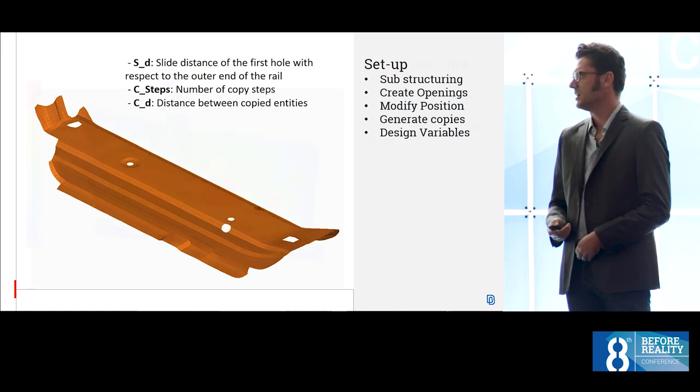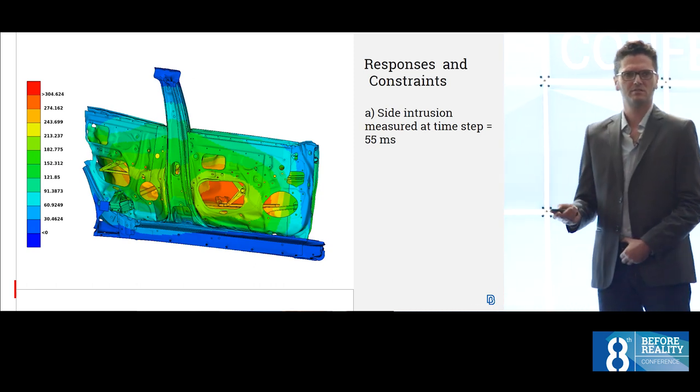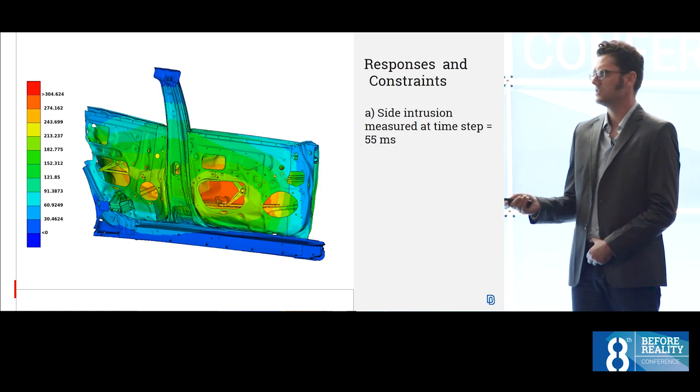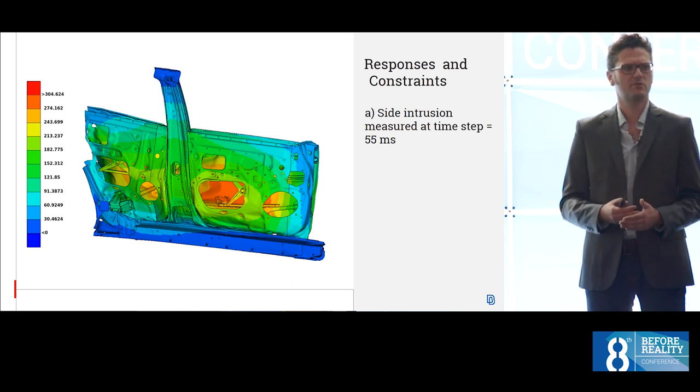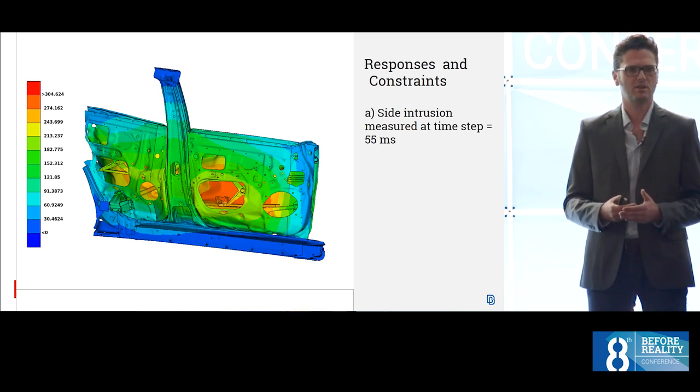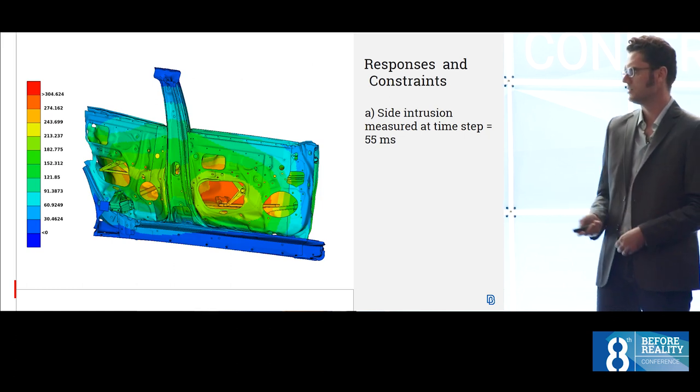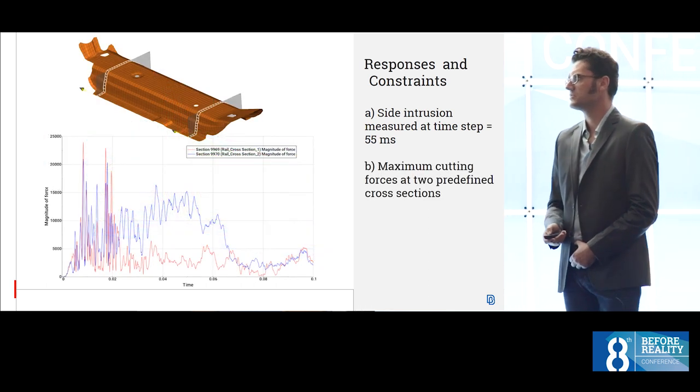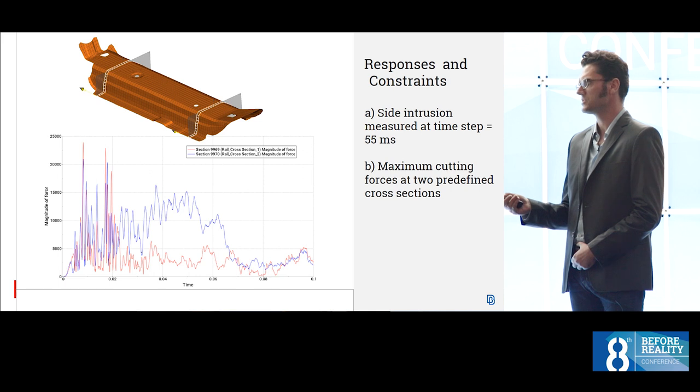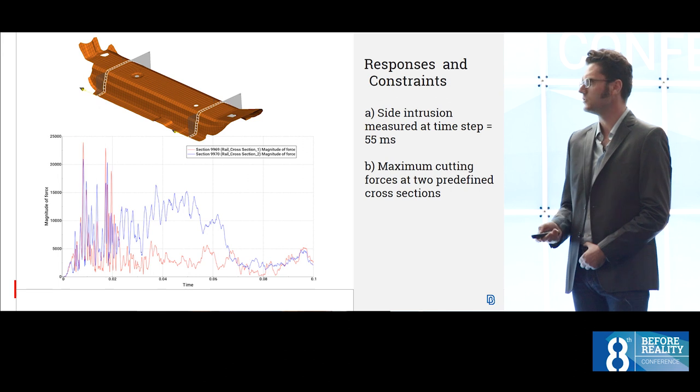The responses and the constraints were actually two. One was the intrusion, the measured intrusion. This was actually performed by setting up a post-processing feature in META Post, so not really a direct value calculated by the simulator, but with a little session that runs in META Post. And the other was the maximum cutting forces at two locations along this particular part, so as to see how much force goes through it.